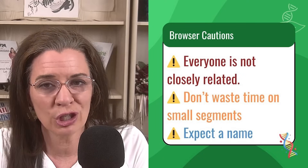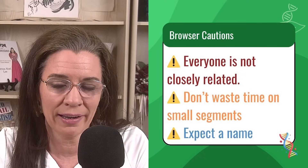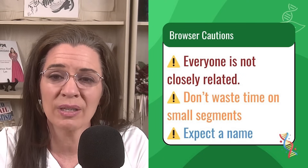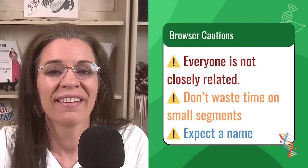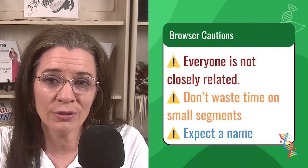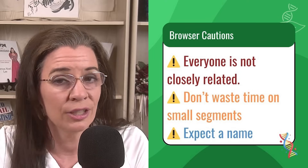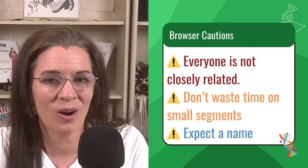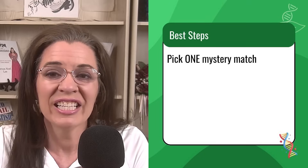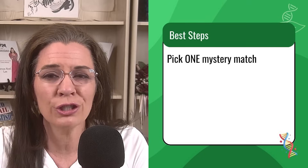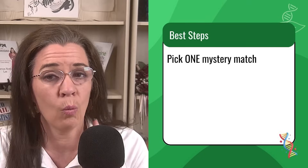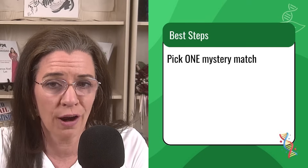Let me leave you with a few final tips about what not to do with the chromosome browser. Don't assume everyone who shares a segment is closely related. Don't waste your time on segments under six centimorgans. Don't expect the chromosome browser to tell you the answer of how you're related — it's a tool, not a magic wand. Instead, save your sanity and build out your genetic family tree by picking one mystery match you want to figure out.